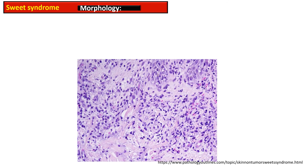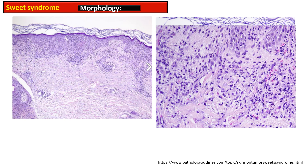In the high-power view, it is evident that there is leukocytoclasia with presence of nuclear dust, but there is no vasculitis. There is also equivocal presence of neutrophilic infiltrate in the subcutaneous tissue. Histocytoid Sweet syndrome is also described; this variant includes histocytoid cells, which are immature myeloid cells commonly mistaken as histiocytes.